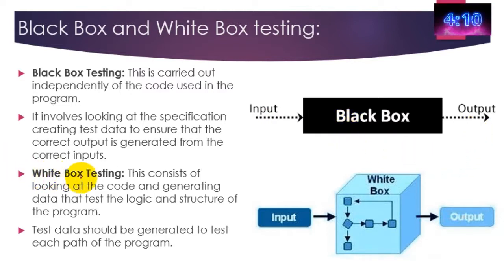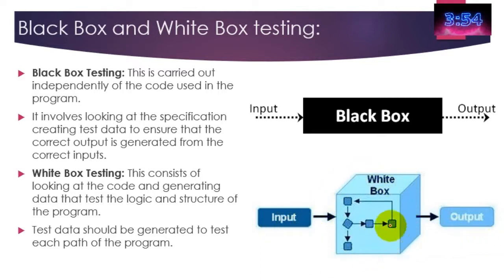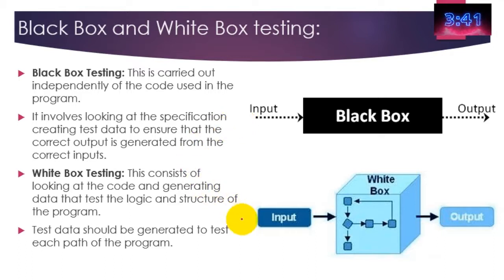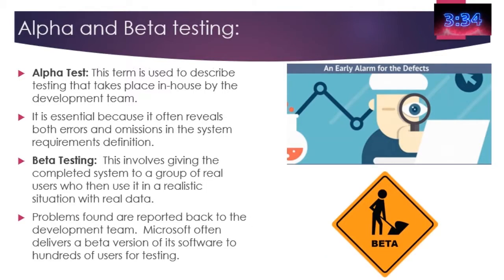Whereas white box testing consists of looking at the code and generating the data that tests the logic and structure of the program. You put in code and you understand what needs to be done with that data and what should come out — so there's a lot more insight into what's happening with the data. Black box testing is just looking at the output to make sure it meets the test plan, whereas white box testing is looking at the structures and the code manipulation that takes place.